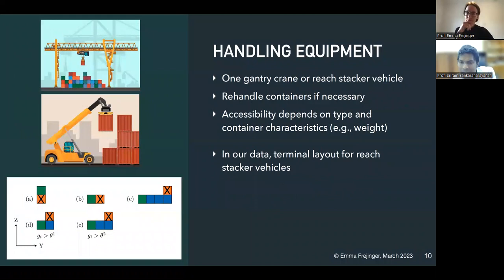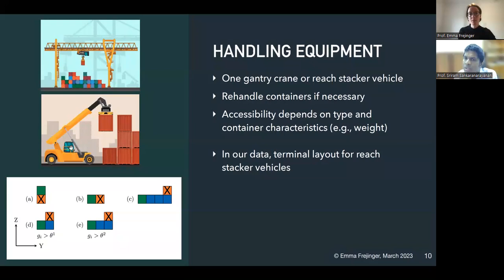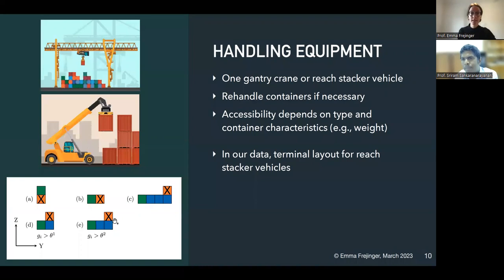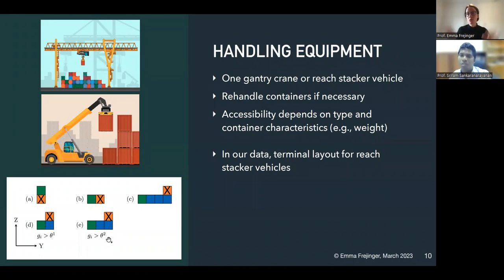A question: why can't you pick the orange one in cases C and D? It's because the arm of the reach stacker is not long enough and the visibility from the driver is not good enough to pick it — so it's not an allowed move. In cases where you physically can pick a container, you can only do so if its weight is not too heavy, because the further the arm extends from the vehicle body, the heavier the lift feels. This depends on the reach stacker's capacity; we use a threshold from the series number of the reach stacker to determine the requirements for each pick.